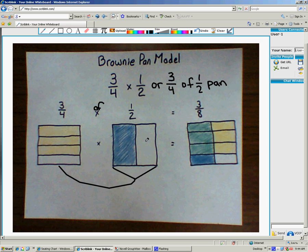The overlap in the brownie pan is your answer. So, you've got 3 pieces out of 8 total pieces that are purchased. And that is what 3 fourths of 1 half is. 3 eighths.